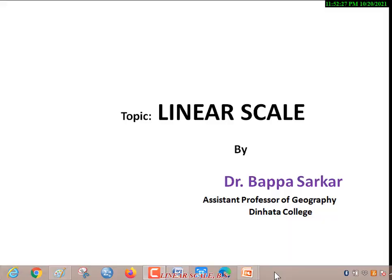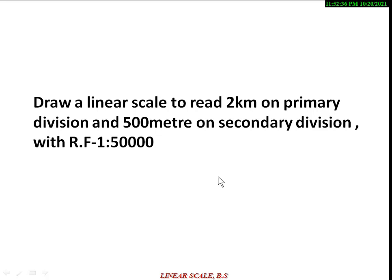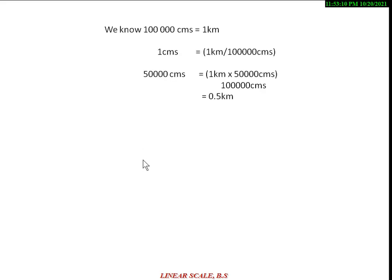Hello everybody, today I am going to discuss about linear scale — how you draw a linear scale from different data. The problem is: draw a linear scale to read 2 km on primary division and 500 meters on secondary division with RF 1 is to 50,000. From this data we get three things: 2 km primary division, 500 meter secondary division, and RF 1:50,000.